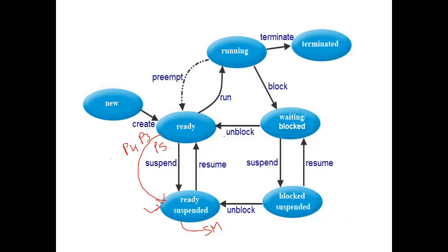When processes come to the ready state, they want to use resources immediately. If resources are free, they will be assigned to that process. If resources are not free, instead of waiting in main memory, those processes will be moved to the ready suspended state — that is, in secondary memory. Since main memory is limited, such processes are moved to secondary memory where they wait for their chance. Also, when the ready state is almost full and cannot take new processes, some processes will be moved from ready state to ready suspended state.